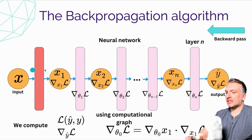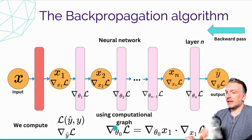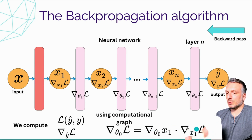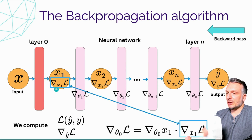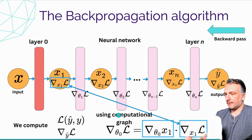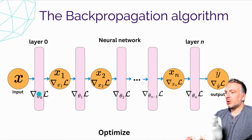Now I compute the gradients for layer zero with parameters theta zero. The gradient of the loss with respect to theta zero equals the gradient of x1 with respect to theta zero, times the gradient of the loss with respect to x1. The gradient of the loss with respect to x1 is already computed, so I pull it from the previous node. I compute the gradient of the output with respect to the parameters using the computational graph and store the gradient for this layer. I've now computed all the gradients for all the different layers in the neural network.